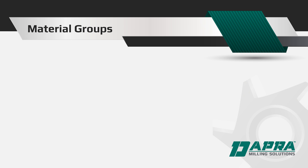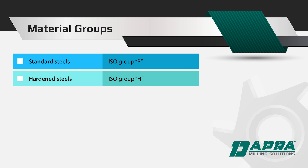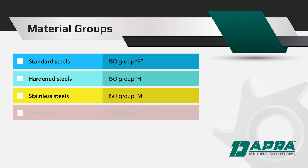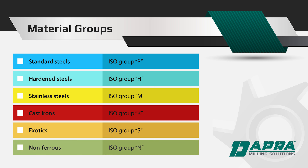From previous videos, we learned that there are six primary material groups for machining: standard non-heat treated steel, hardened steel, stainless steel, cast iron, exotics, and non-ferrous.